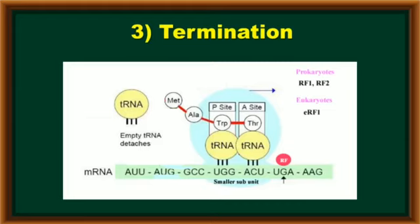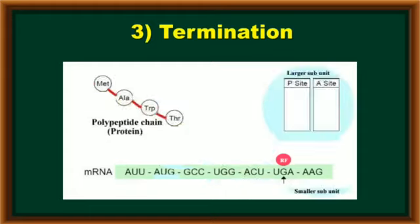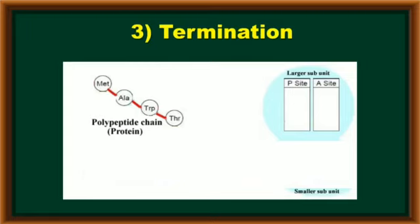These terminating factors attach on the terminating codon. Due to this terminating factor, immediately the ribosomal complex will be separated - smaller subunit and larger subunit, both are separated. And the growing polypeptide chain also separates from the enzyme complex. Finally, the mRNA molecule, having a shorter lifespan, will degenerate and the information present on mRNA is transferred to the polypeptide chain in the form of a protein. This is called termination.